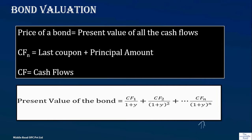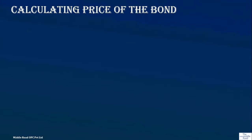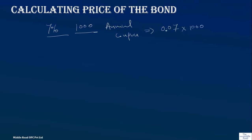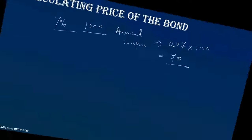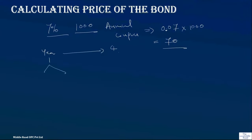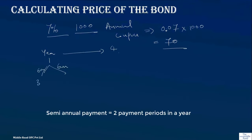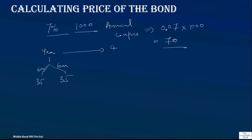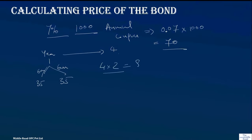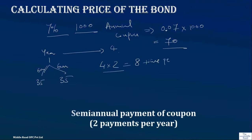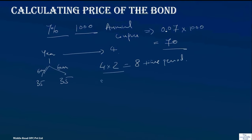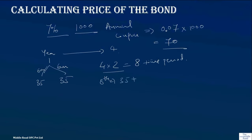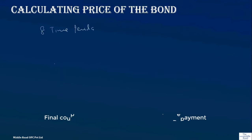In most books, the principal amount and last coupon payment are shown separately, but here I have combined them. The coupon rate is 7%, face value is 1,000, so the annual coupon is 70, paid in two installments of 35. Year one through year four is broken into six-month periods, giving eight total time periods. In the eighth period, you receive 35 coupon plus 1,000 principal repayment, making the last cash flow 1,035.